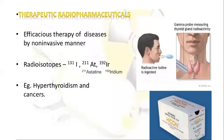Radioisotopes are used as therapeutic radiopharmaceuticals where treatment of diseases is carried out in a non-invasive manner. Radioisotopes of iodine, astatine, and iridium are used in the treatment of various disorders, for example hyperthyroidism and certain cancers. Gamma rays are used to probe or measure thyroid gland activity — in thyroid-related tracing, the patient is given iodine tablets orally, and then detectors are used to determine whether the thyroid is functioning properly or whether there are any thyroid-related cancers.